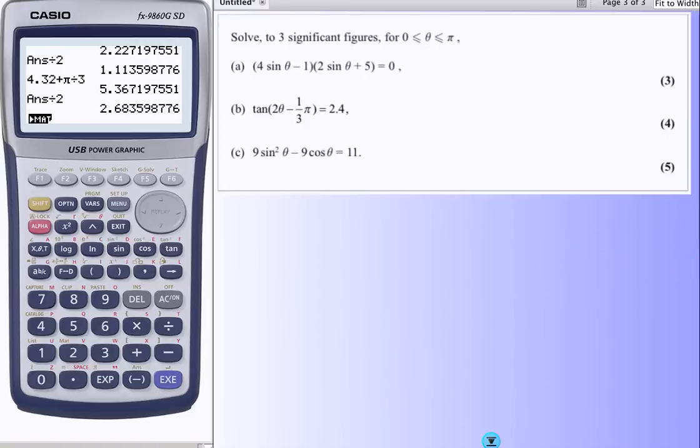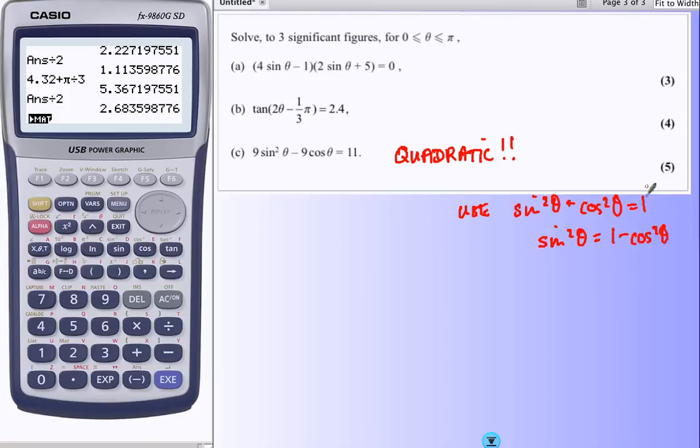And our last problem here. What we've got to realize is that this is going to be a quadratic at some point. The problem, at the moment, is we've got a mixture of sine and cosine. And we use this very popular identity. sin²θ + cos²θ = 1.